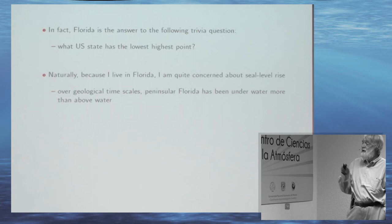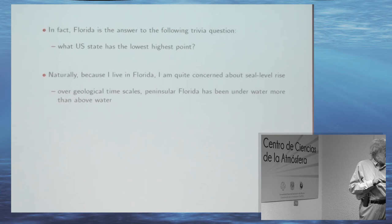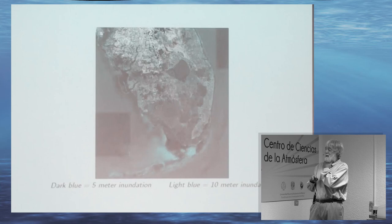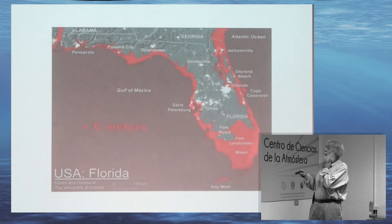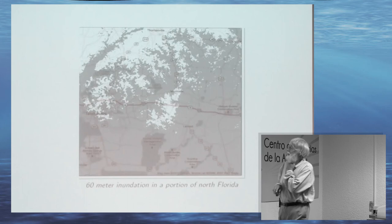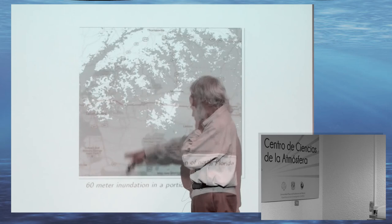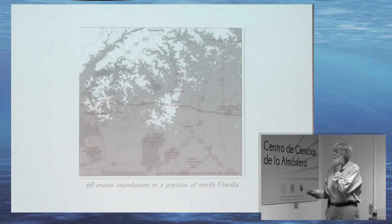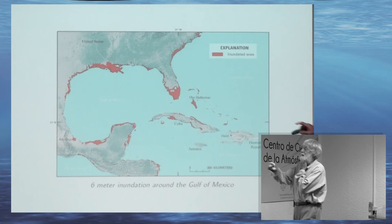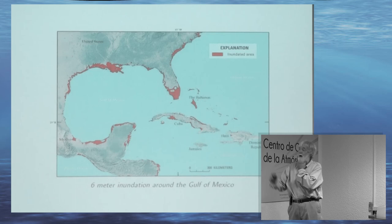Over geological times, Florida has been underwater more than it's been above water. Here's what happens if you have a five-meter sea level rise to southern Florida — and this is all of Florida. I happen to live right about here. So if we get a 60-meter inundation, I have beachfront property. This shows the Gulf and the Yucatan — a six-meter rise would put all of the red part underwater.